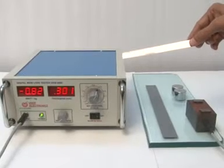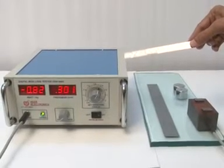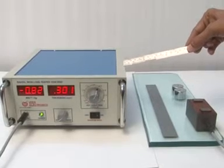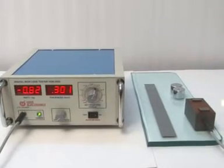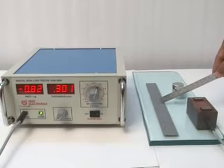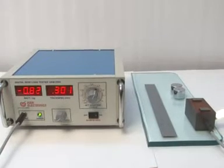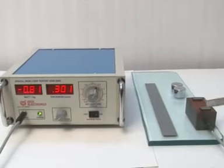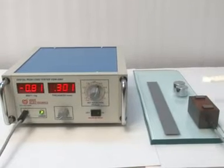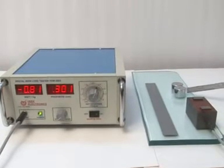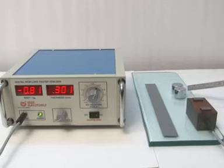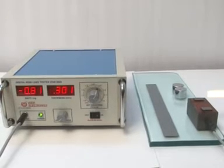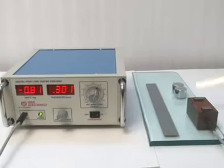This is your digital iron loss tester model VDW 2065. This is your test specimen. This is your prop. This is the core of the prop. This is the weight which is used to reduce the air gap between the prop core and test specimen.